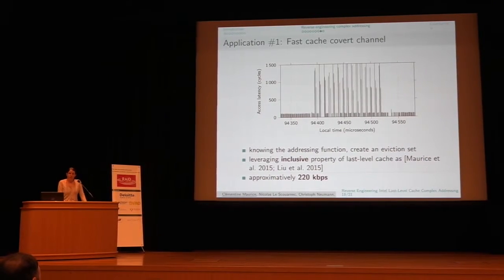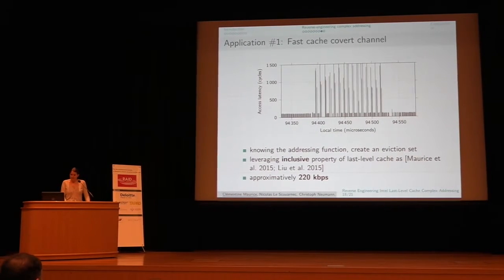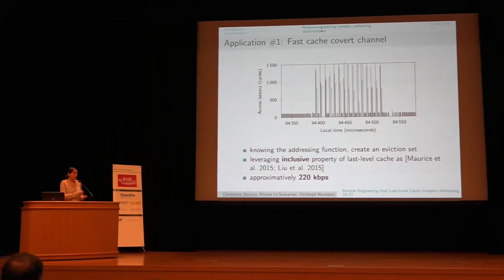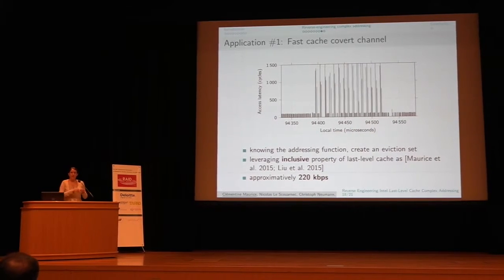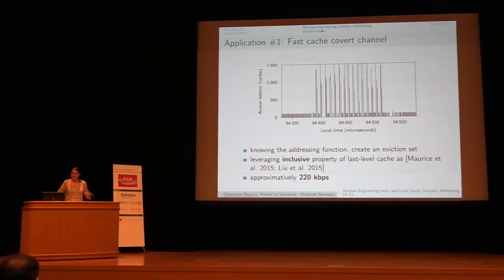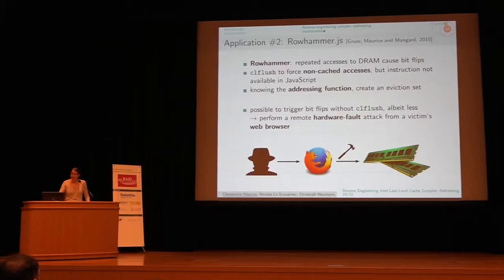Our first application was performing a fast cache covert channel, similar to other Prime+Probe attacks on the last-level cache. We leverage the inclusive property of the LLC: using the addressing function, we create a set of addresses that evict the receiver's lines. The sender evicts lines of the receiver, and they communicate via short and slow accesses. Doing this, we achieve a bitrate of approximately 200 kilobits per second.